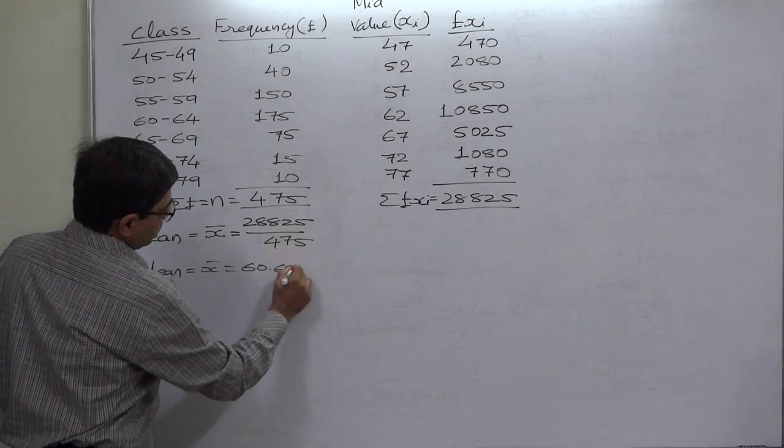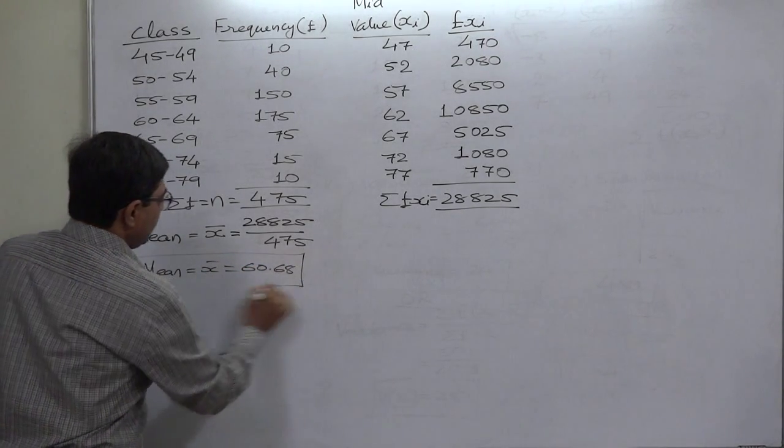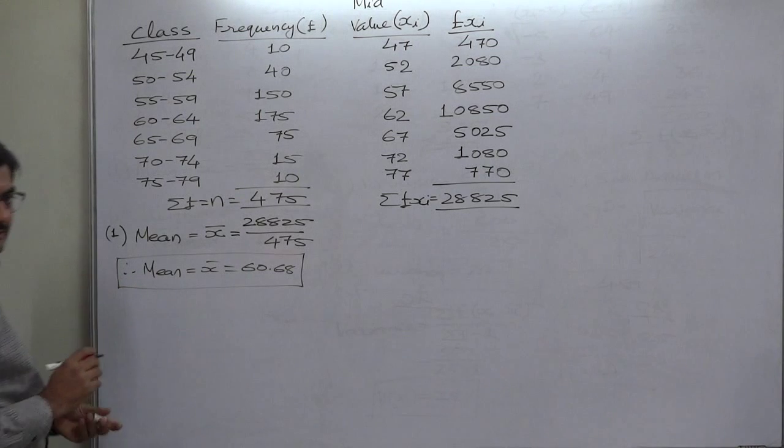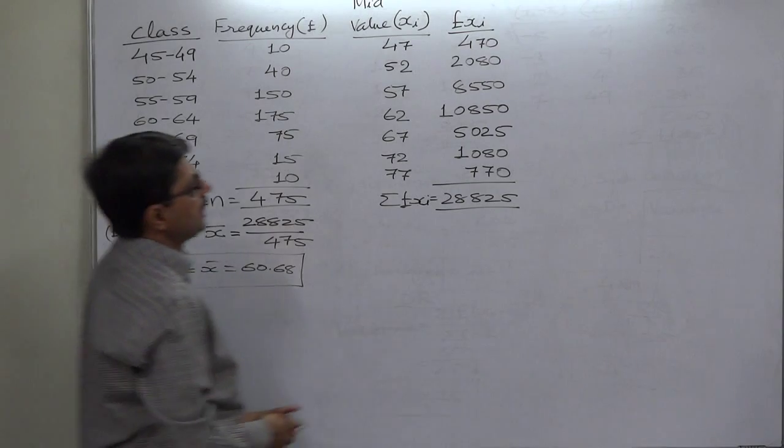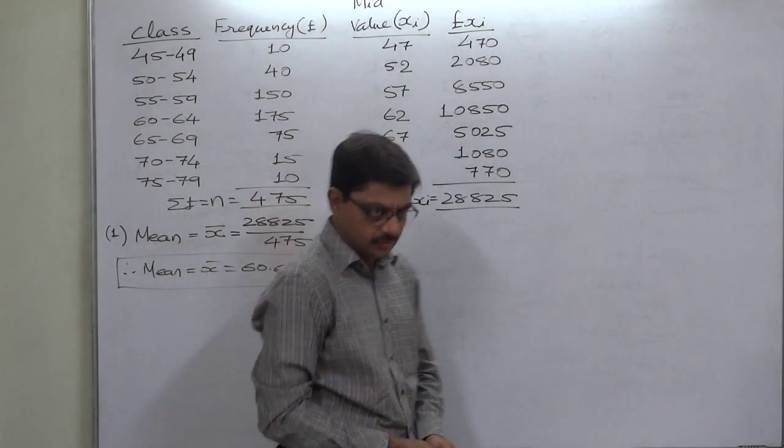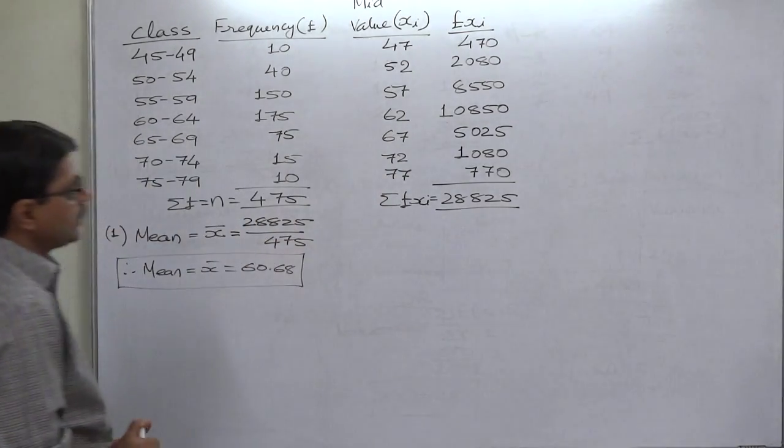The mean is 60.68. The mean is not an integer value. So now we are not in a position to use the formula of x minus x bar whole square. So now what?